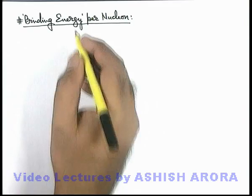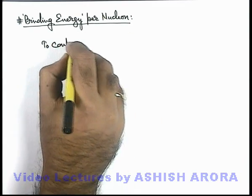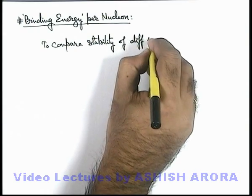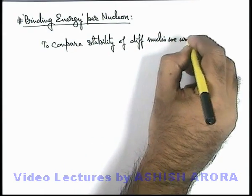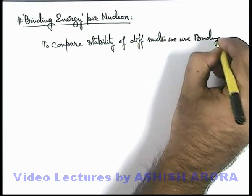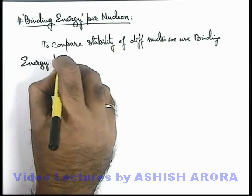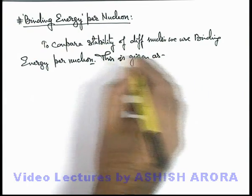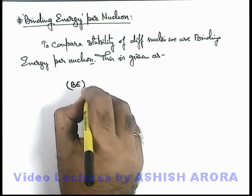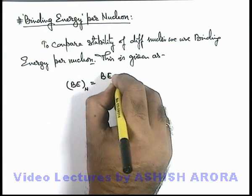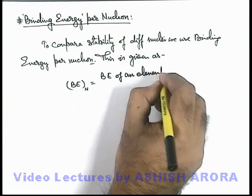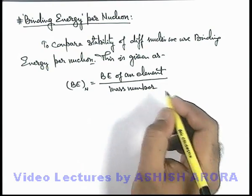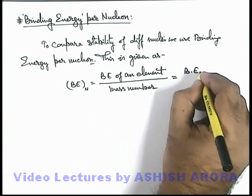Now this term, binding energy per nucleon — to compare the stability of different nuclei, we use binding energy per nucleon. This is written as BEN. Binding energy per nucleon is the binding energy of an element, that means the binding energy of the nucleus of that element, divided by the mass number of the element. We can simply write it as binding energy divided by its mass number, that is A.